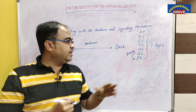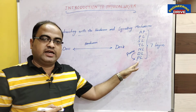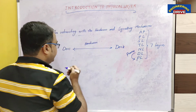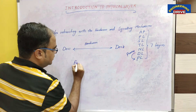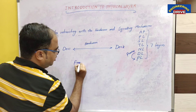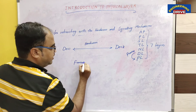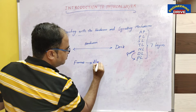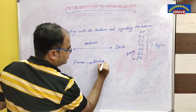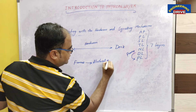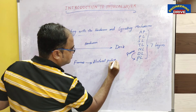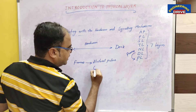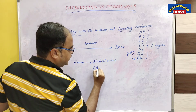Frames are given by the data link layer to the physical layer. What this physical layer will do is it will take these frames and convert them into electrical pulses.